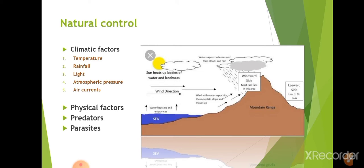Natural control means the control of insect pests by nature. It operates in nature without human effort — we are not involved at all. Nature itself controls the population of insect pests, and if the population is controlled, there is no disease. It includes climatic factors such as temperature, rainfall, light, atmospheric pressure, and air currents, as well as physical factors, predators, and parasites.